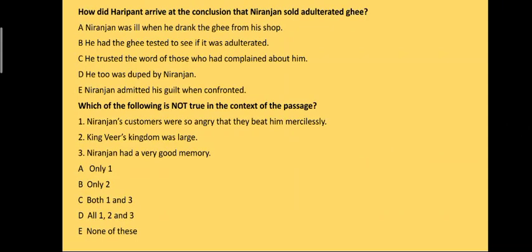How did Haripant arrive at the conclusion that Niranjan sold adulterated ghee? The answer is: he had the ghee tested to see if it was adulterated.